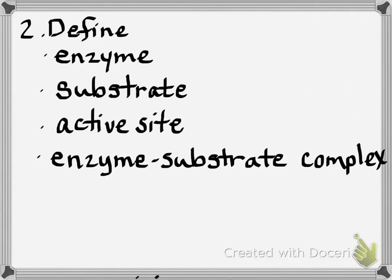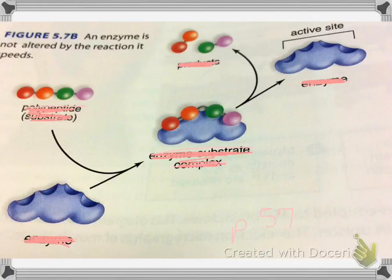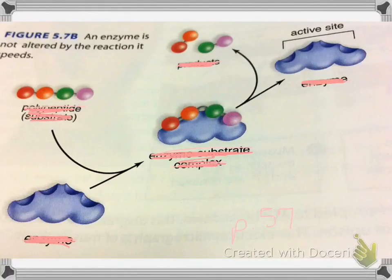Question two is: define enzyme, substrate, active site, and enzyme-substrate complex. I found something similar on page 57. I want you to pretend you had the picture but the words were gone — I scratched out the words. Using this picture, could you label the things listed in number two? Let's start with the enzyme.